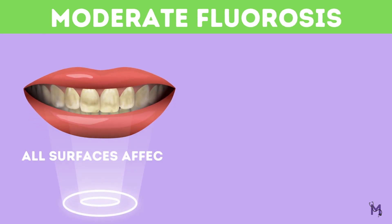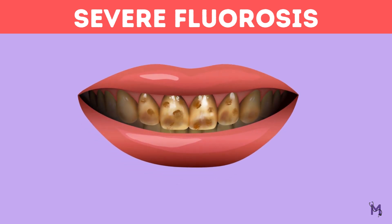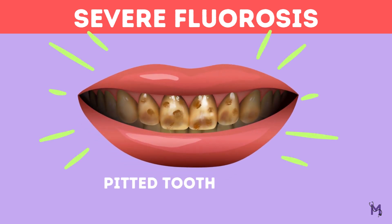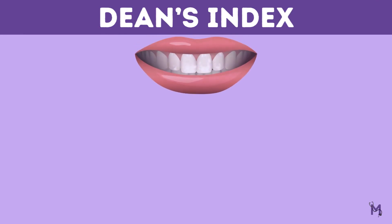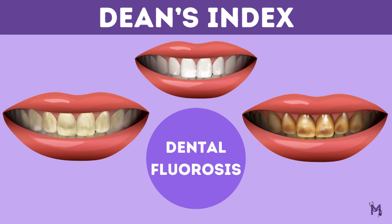On the other hand, a tooth is said to have moderate fluorosis when all the enamel surfaces of the teeth are affected and the surfaces subjected to attrition show wear. Additionally, brown stains are also present here. In cases of severe fluorosis, apart from the clinical features already discussed, there is also discrete or confluent pitting present on the tooth's surface. The Dean's Index talks about all these conditions in detail, which we will learn about in the upcoming videos.